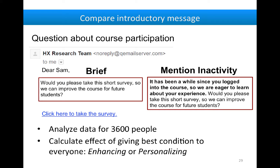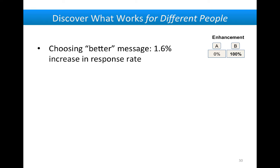So let's give some estimate of what the effect would be if we actually did this dynamically. Choosing the better message didn't actually have much of an effect overall — it slightly increased response rate. In this case, the better message was just the original one. But this masks the fact that the two conditions had very different effects.